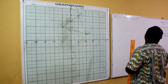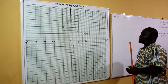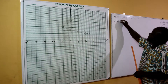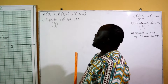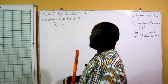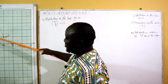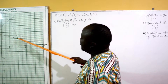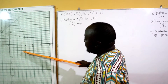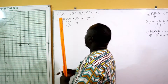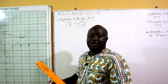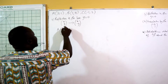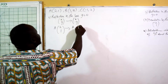In the second part, we are asked to find a reflection in the line y equals zero, where A maps onto A1, B maps onto B1, and C maps onto C1. For a reflection in the line y equals zero — that is, reflection over the x-axis — the point (x, y) becomes (x, -y). So the point (2,1) now becomes (2,-1).